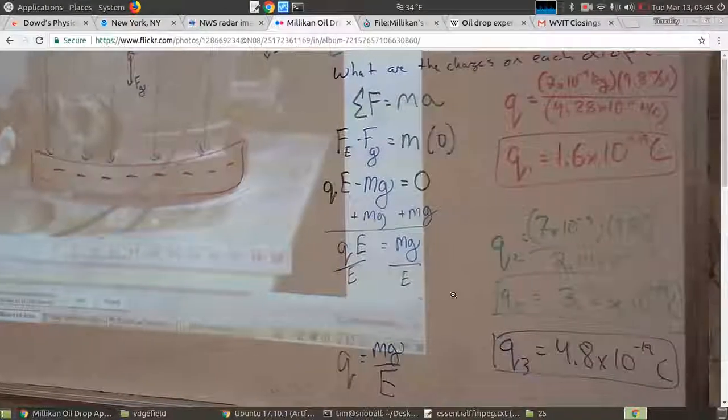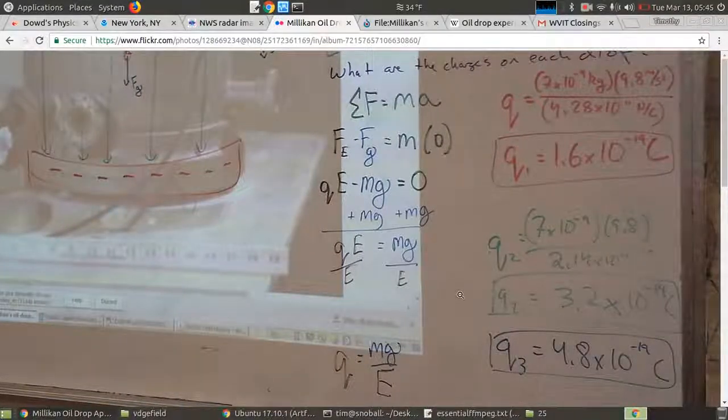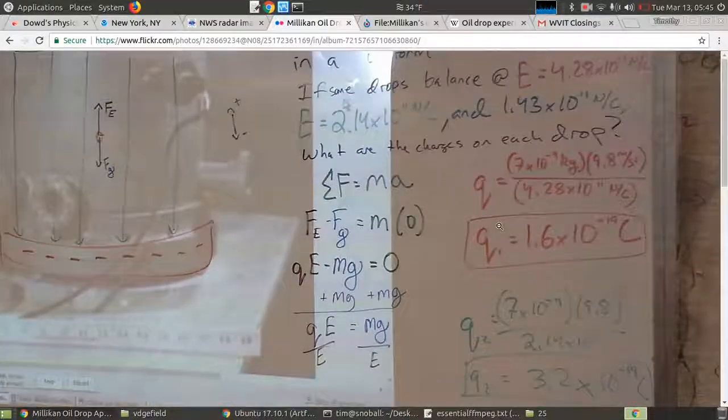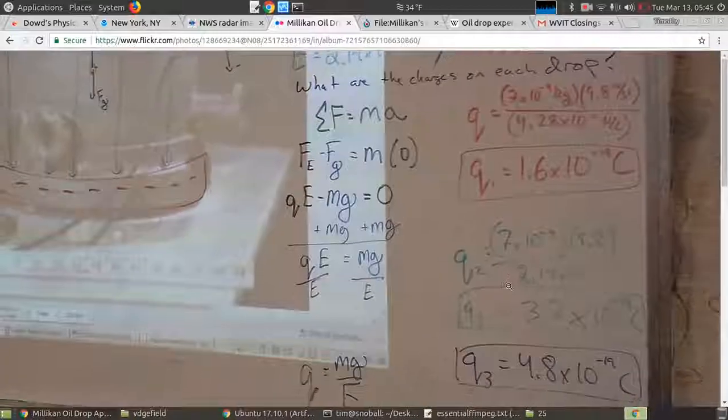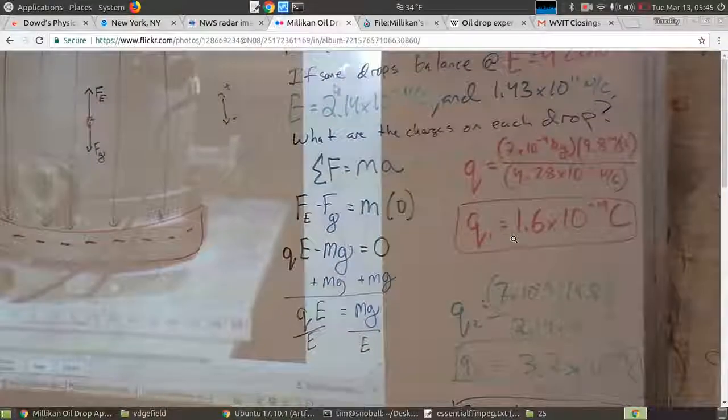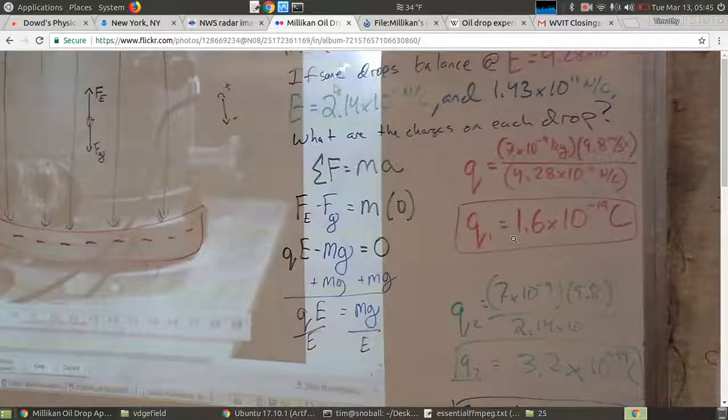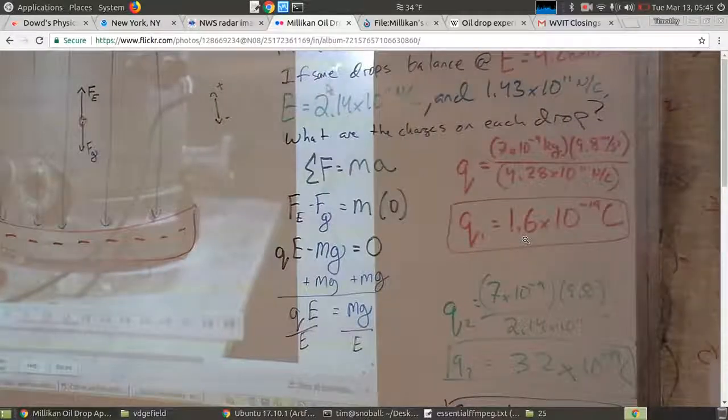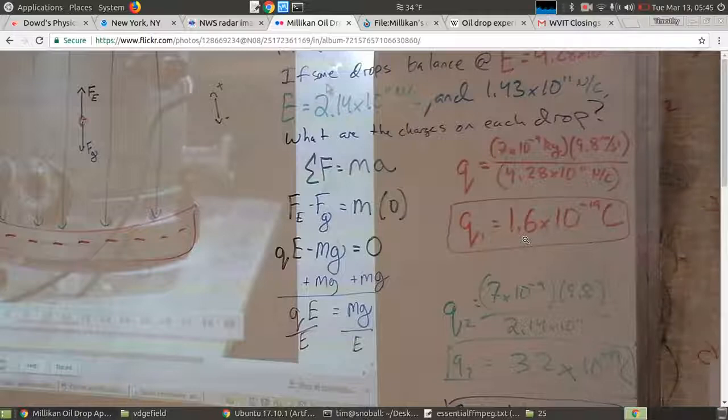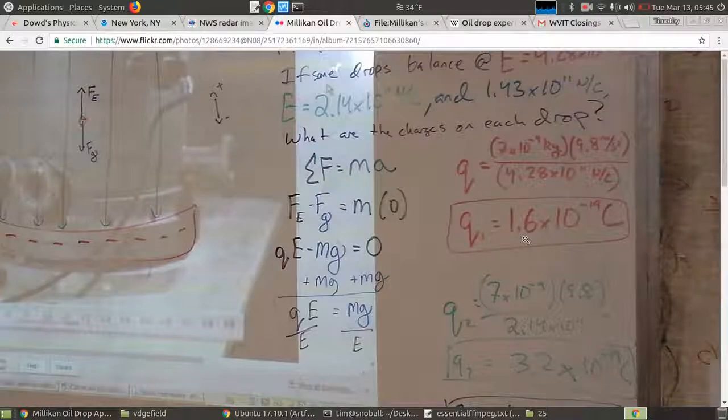So if you plug in the values that were given in the problem, you basically get multiples of this number. And that's how Millikan and Fletcher could say that the charge on the electron was this number. So that's called the elementary charge. And every charge we ever experience is a multiple of this. It was a very big discovery about how atoms and what they're made of behave.